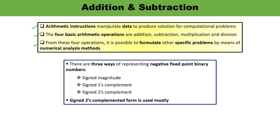When talking about numbers, there are three ways to represent a negative fixed point binary number: sign magnitude, sign 1's complement, and sign 2's complement. For 1's complement, simply invert each bit — 0 becomes 1, 1 becomes 0. For 2's complement, it is a two-step process: first calculate the 1's complement then add 1. Among these three, sign 2's complement is mostly used. However, for floating point operations most computers use sign magnitude representation. Here we will discuss how to develop the hardware implementation.